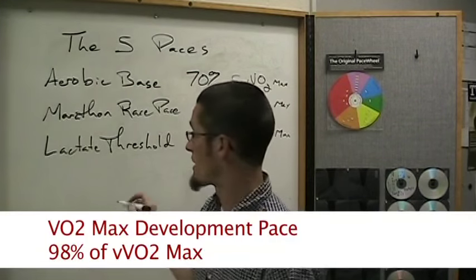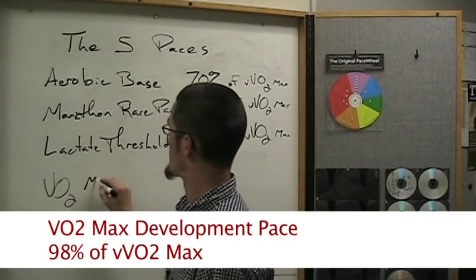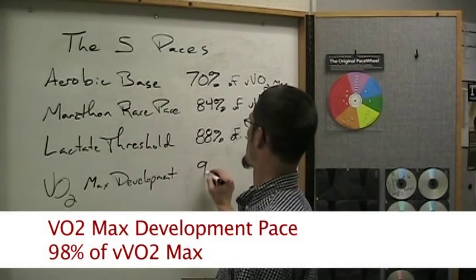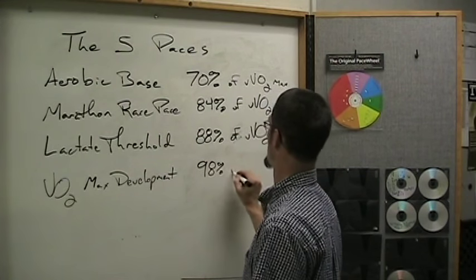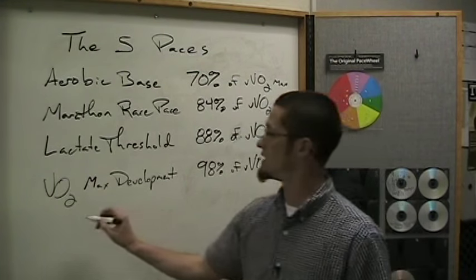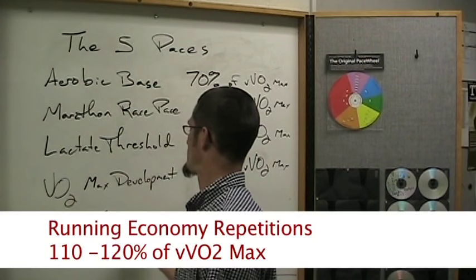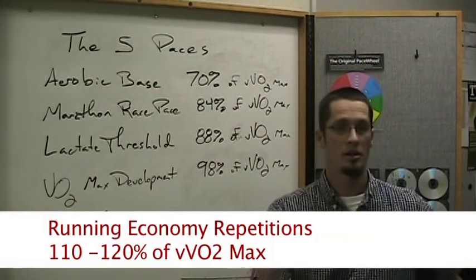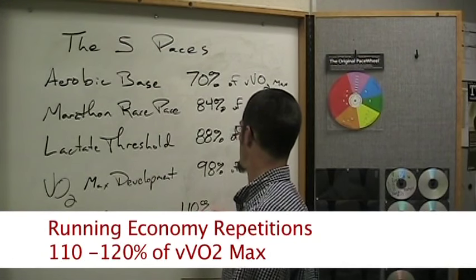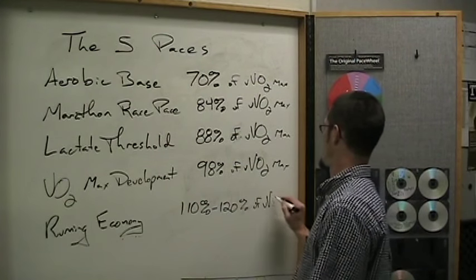Then we have VO2 max development — trying to improve aerobic power — where we train at 98% of velocity at VO2 max. And then running economy repetitions, which are about 110% to as much as 120% of velocity at VO2 max. We're going to give each one of these its due, but first let's talk about how you get there.